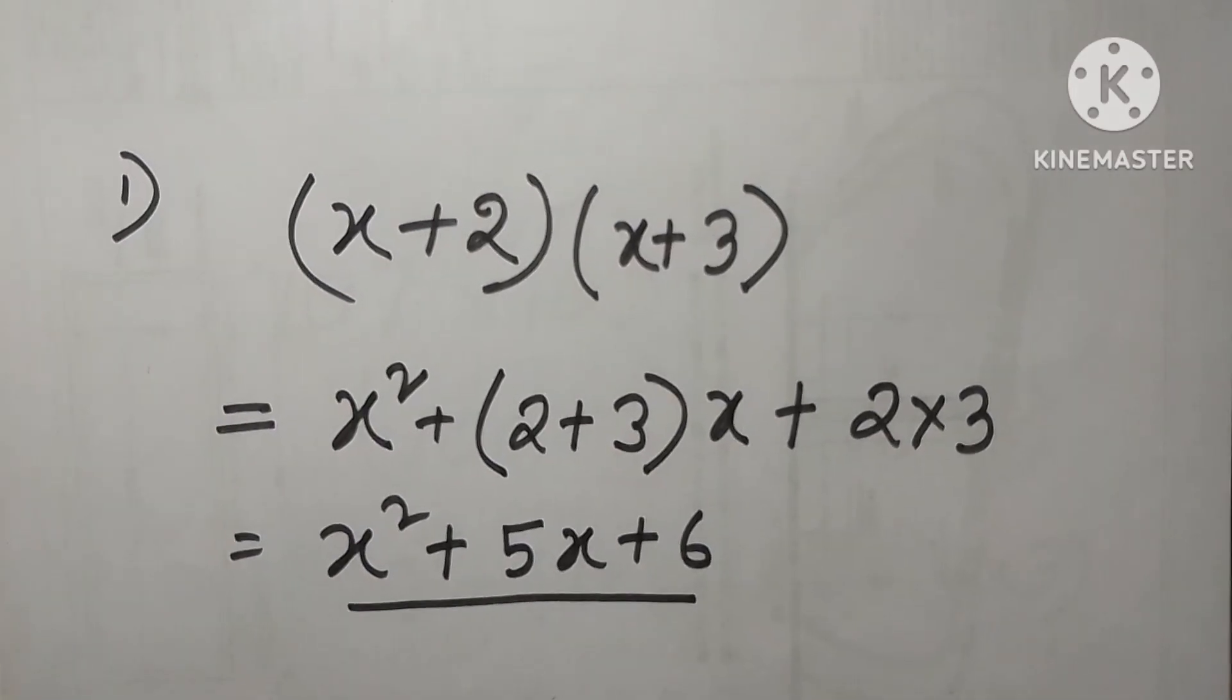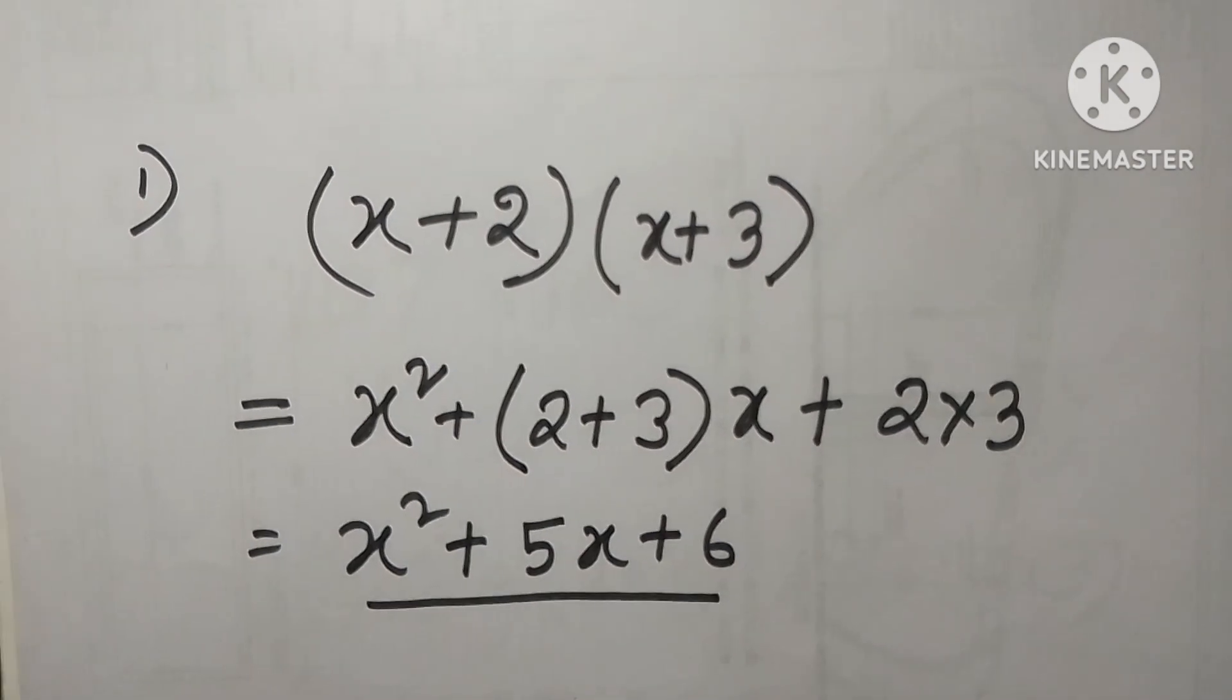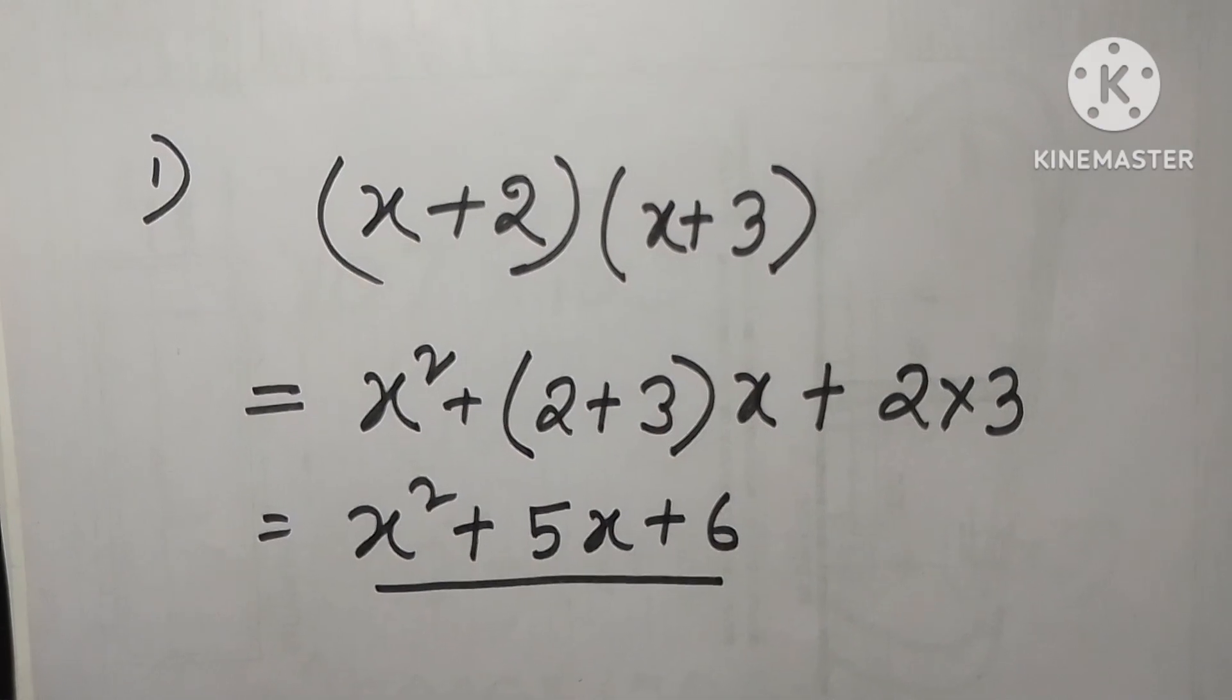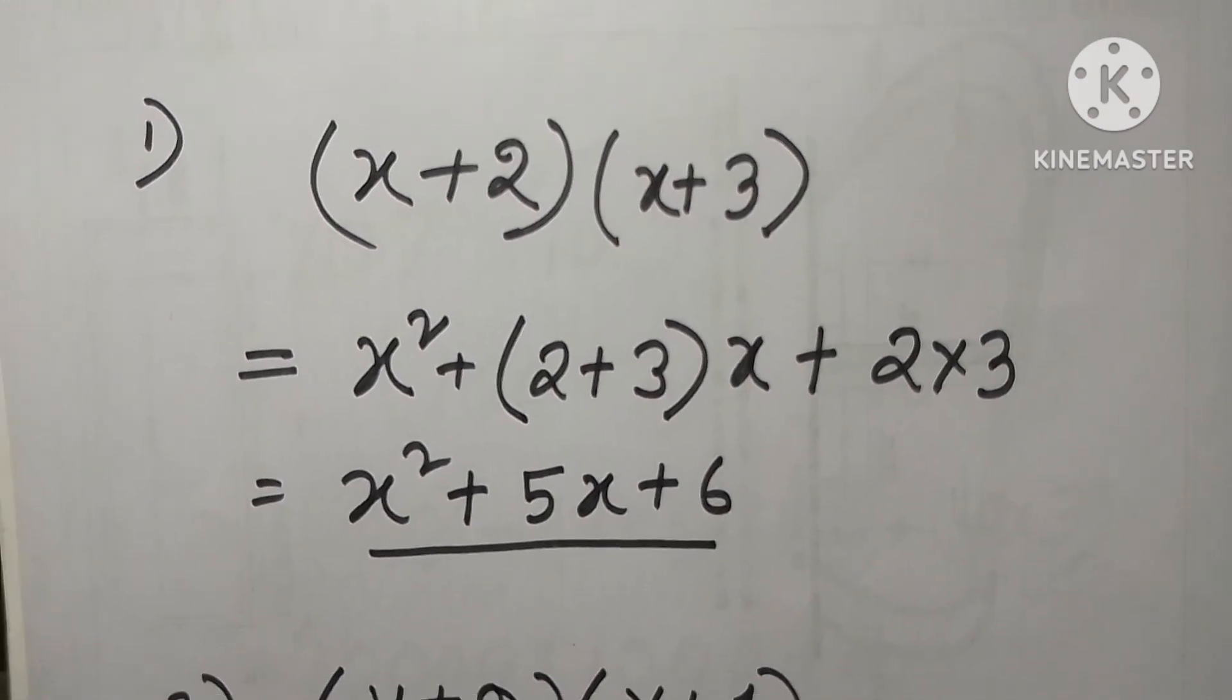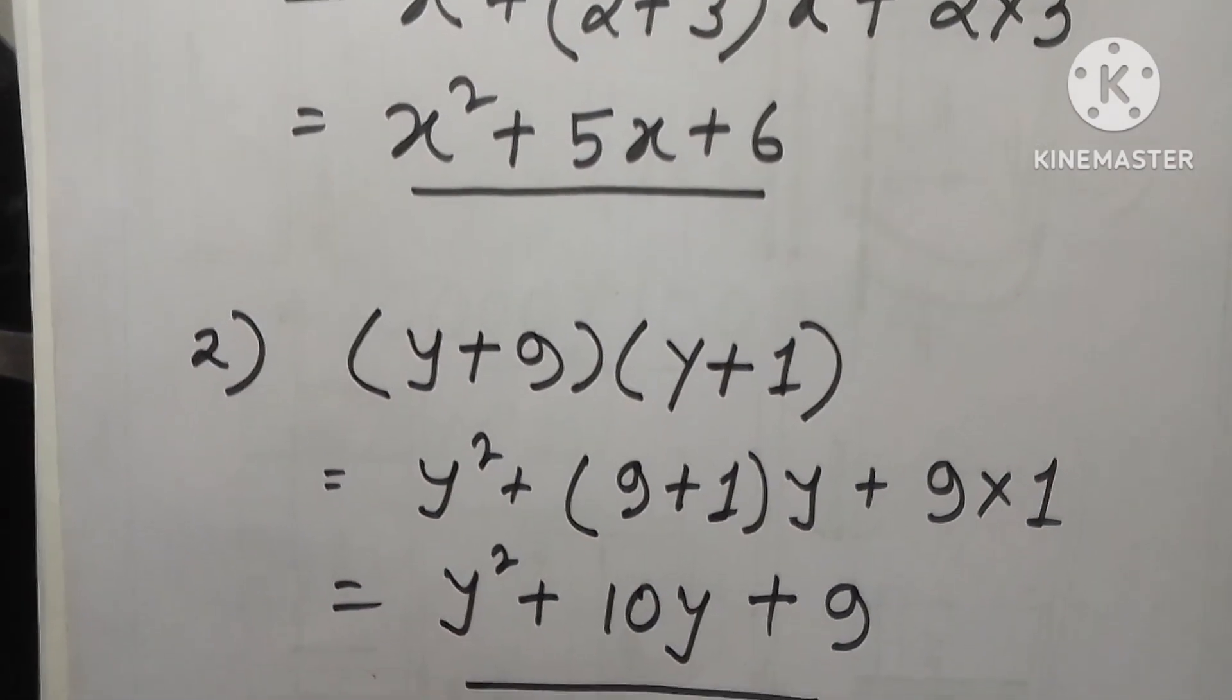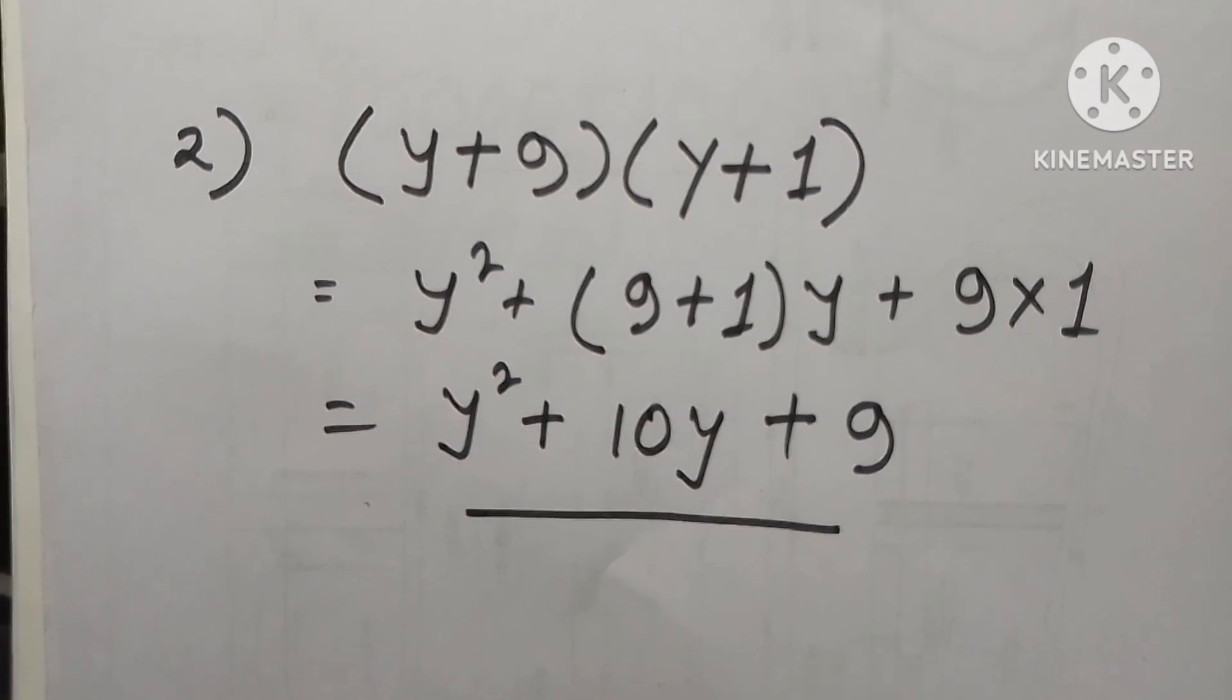Now here I expressed two examples for identity 4 with algebraic terms. The first one is (x+2)(x+3) and the second one is (y+9)(y+1). For both cases, using identity 4, you can easily find out the ultimate expression.